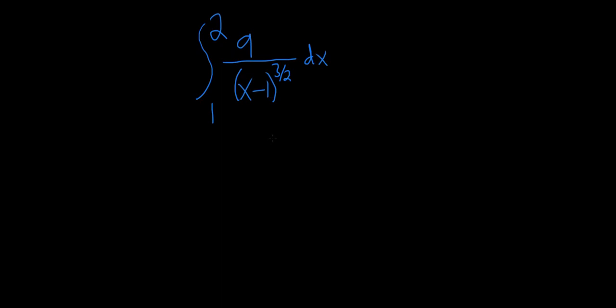So first note that it is improper because it's not continuous at 1. If you were to take this number here and plug it in, you get 9 over 1 minus 1 to the 3 halves, so you would get 9 over 0, which is undefined, so it would be an improper integral.